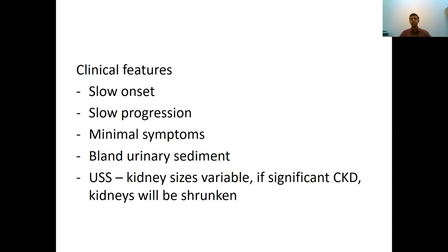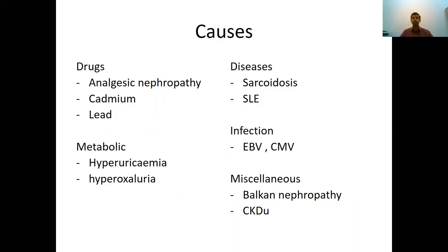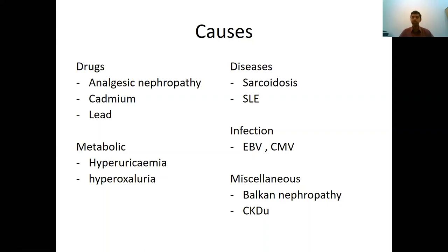The causes are broadly similar to acute interstitial nephritis, but notably, analgesic nephropathy is one of the commonest causes — where patients are on NSAIDs for joint or back pain for months and years continuously. Metabolic causes include hyperuricemia and hyperoxaluria; hyperuricemia patients can also develop gout. Systemic diseases like lupus and sarcoidosis, infections like Epstein-Barr virus and cytomegalovirus, and miscellaneous conditions like Balkan nephropathy and CKDU are also recognized causes.